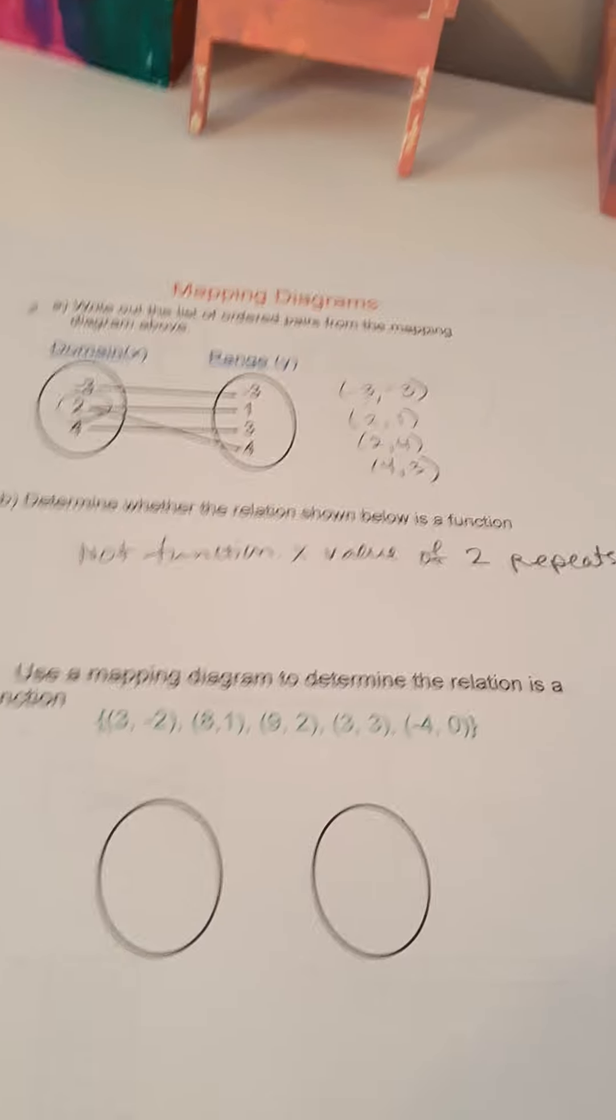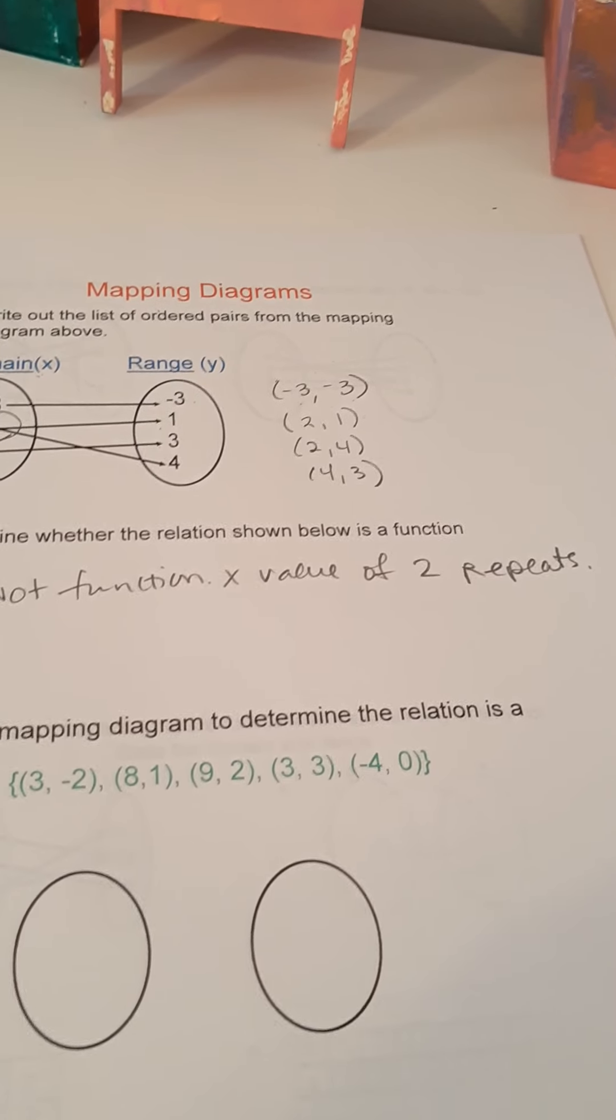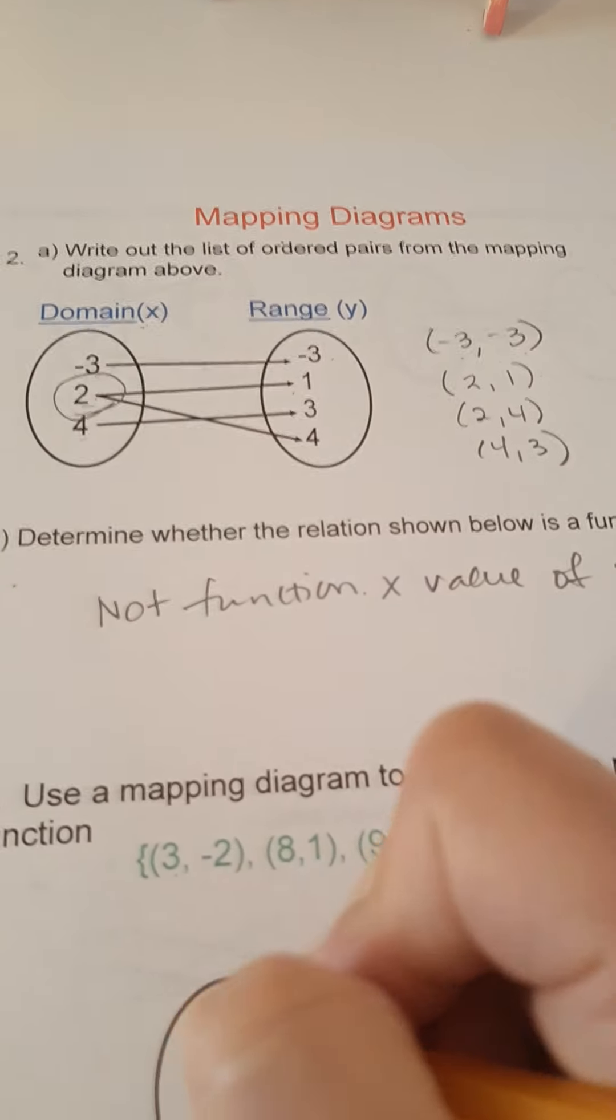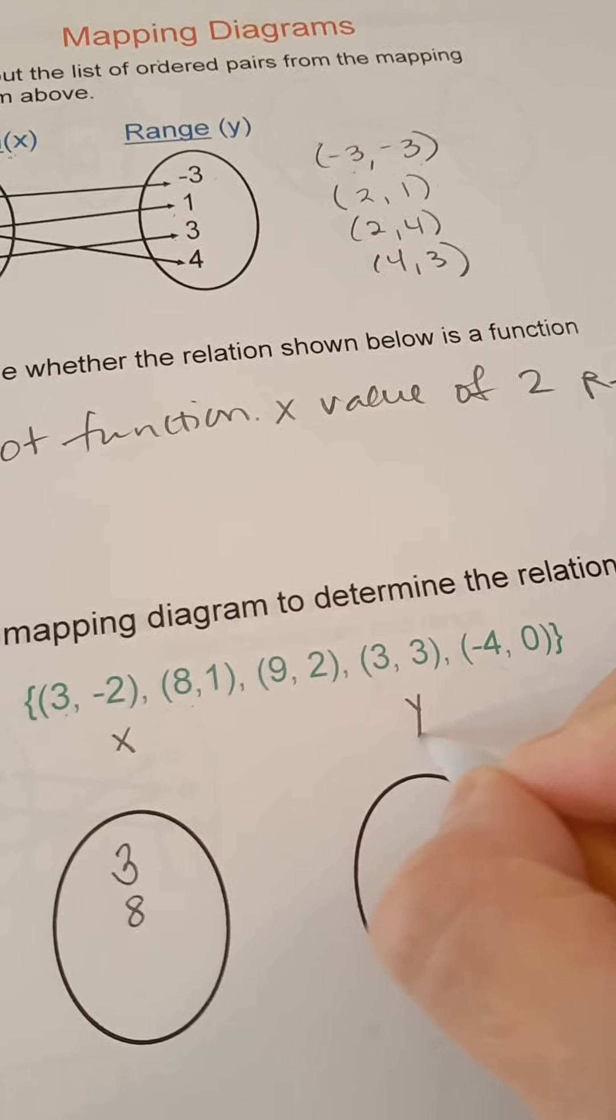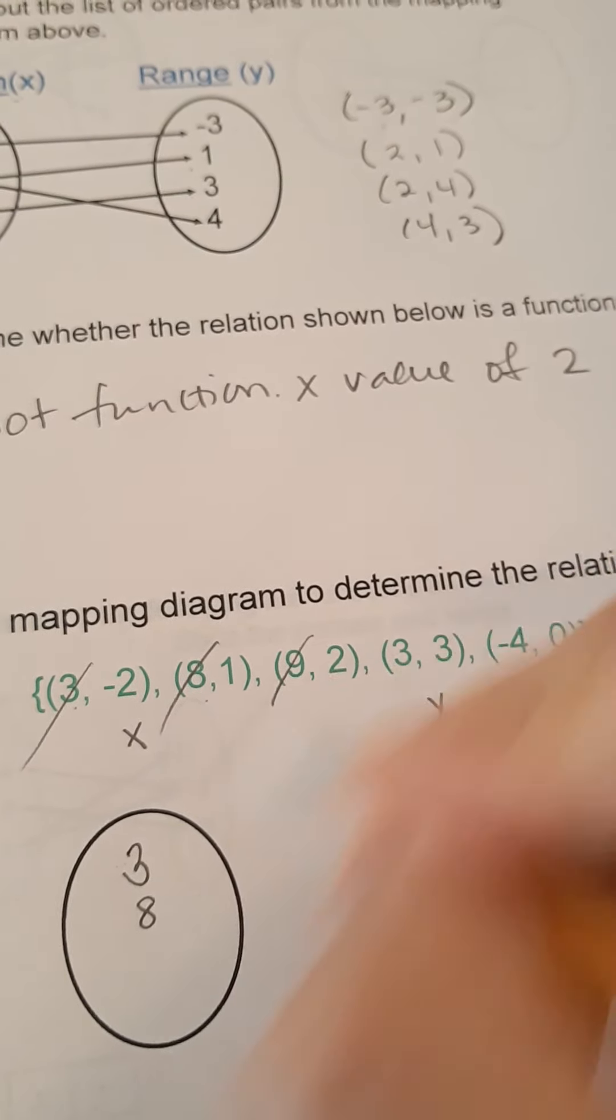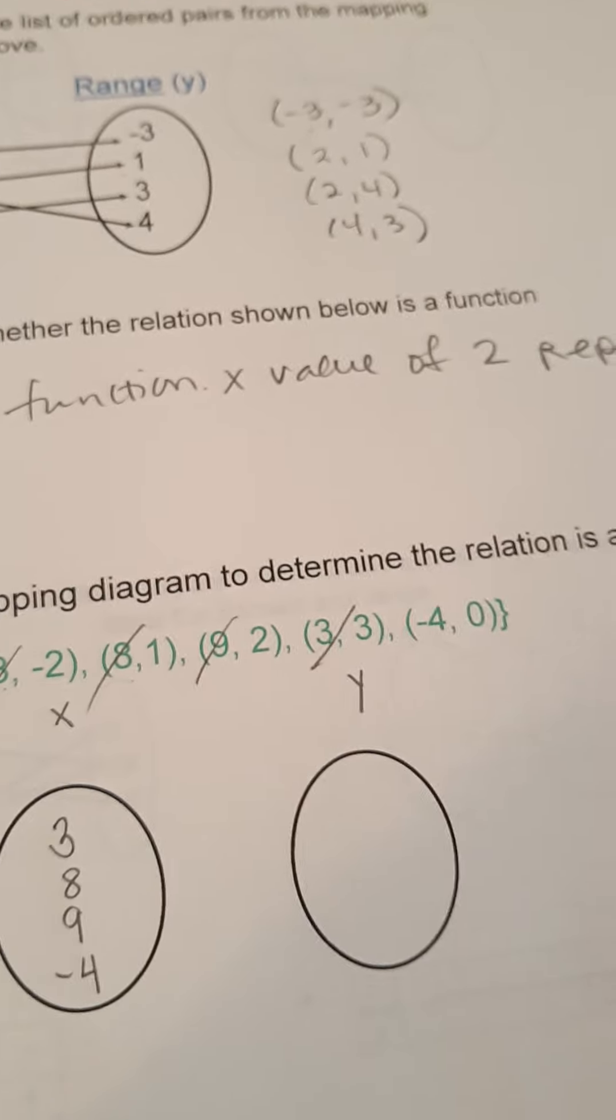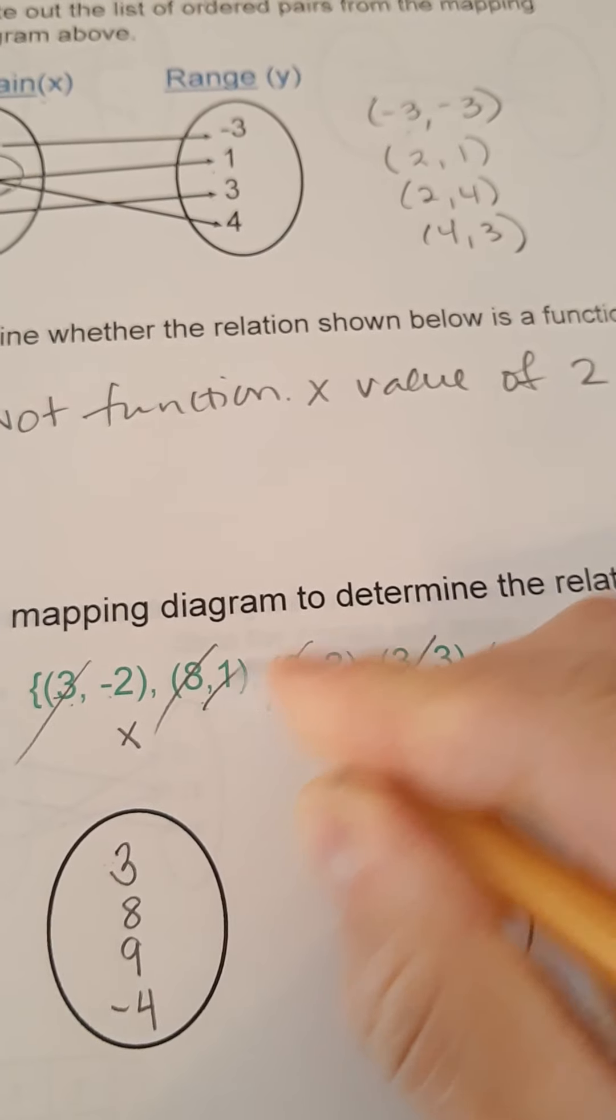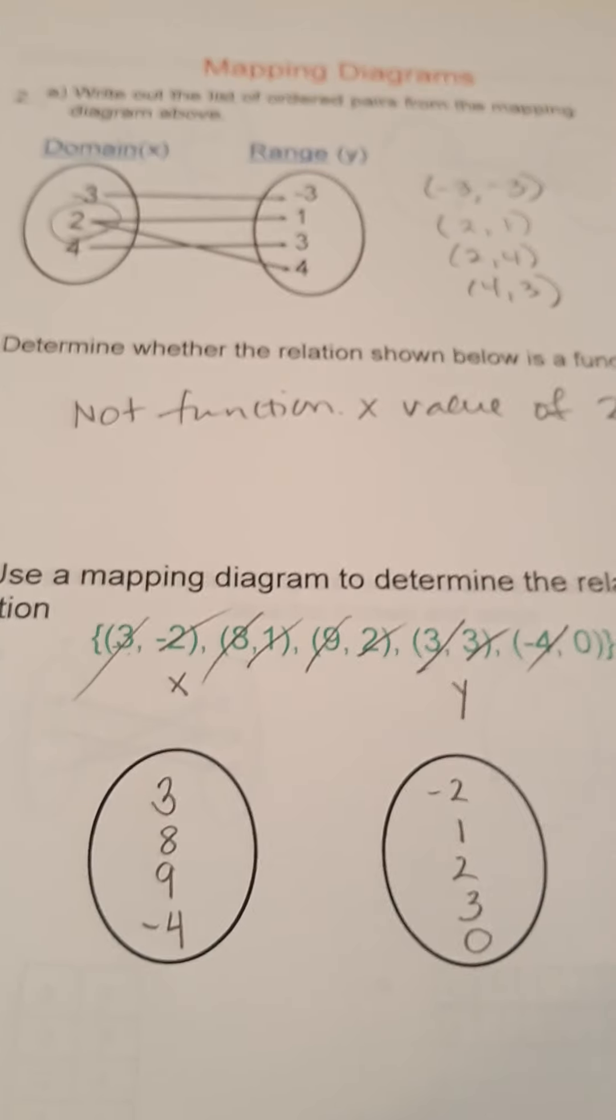So number 3, we're going to create one. Create a mapping diagram to determine if the relation is a function. So, you don't have to put them in numerical order. I'm just telling you that now, so I'm not. As I see them, I'm going to write them. So 3, 8, don't forget domain is x, range is y. And I like to cross them out so I don't duplicate or anything. 9, 3, I already have, I don't write that twice, and then negative 4. And then I have negative 2, 1, 2, 3, and 0. Okay. You don't have to put them in numerical order.